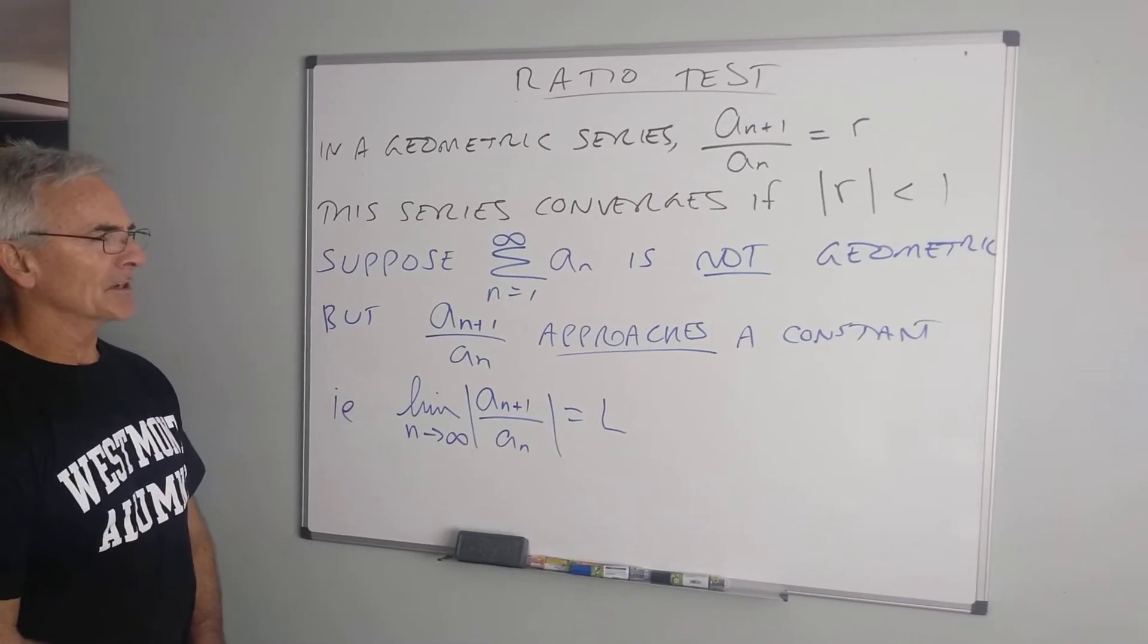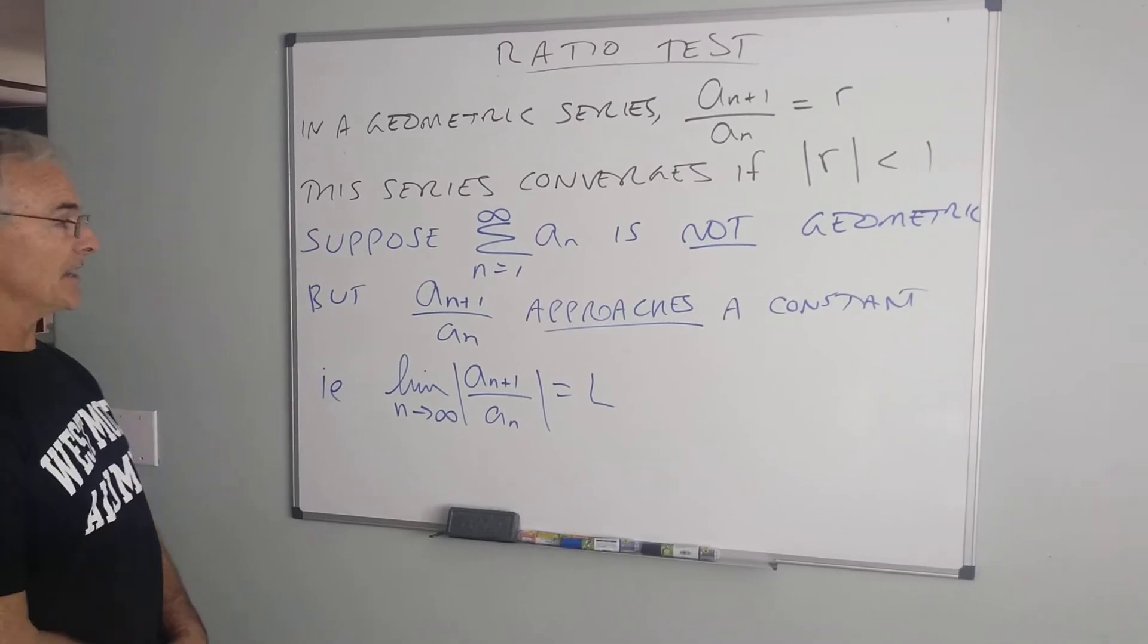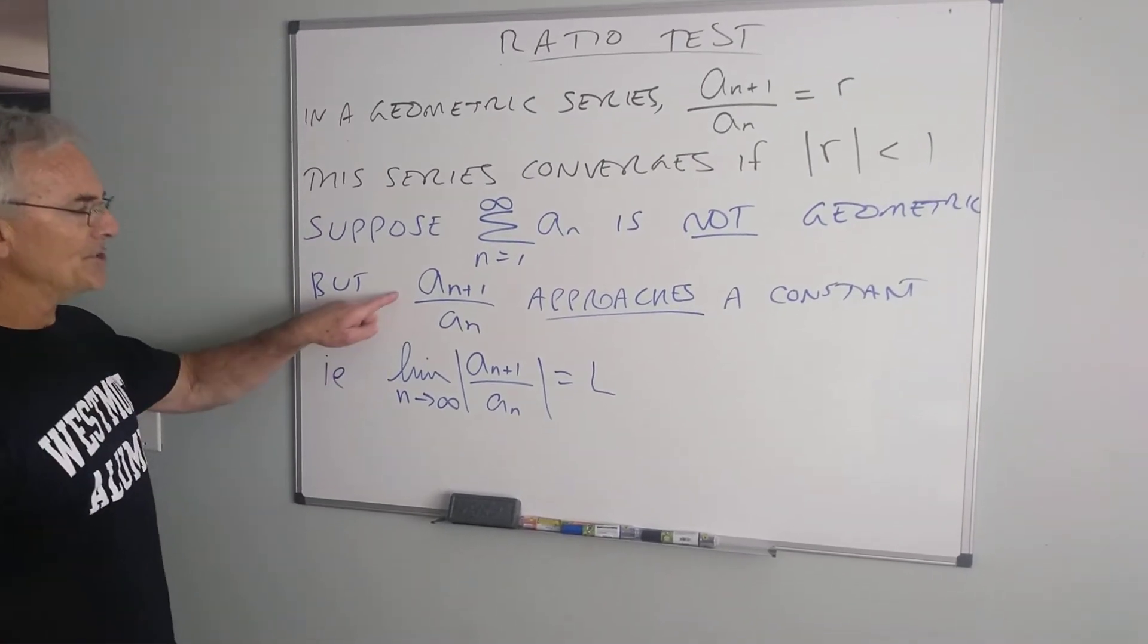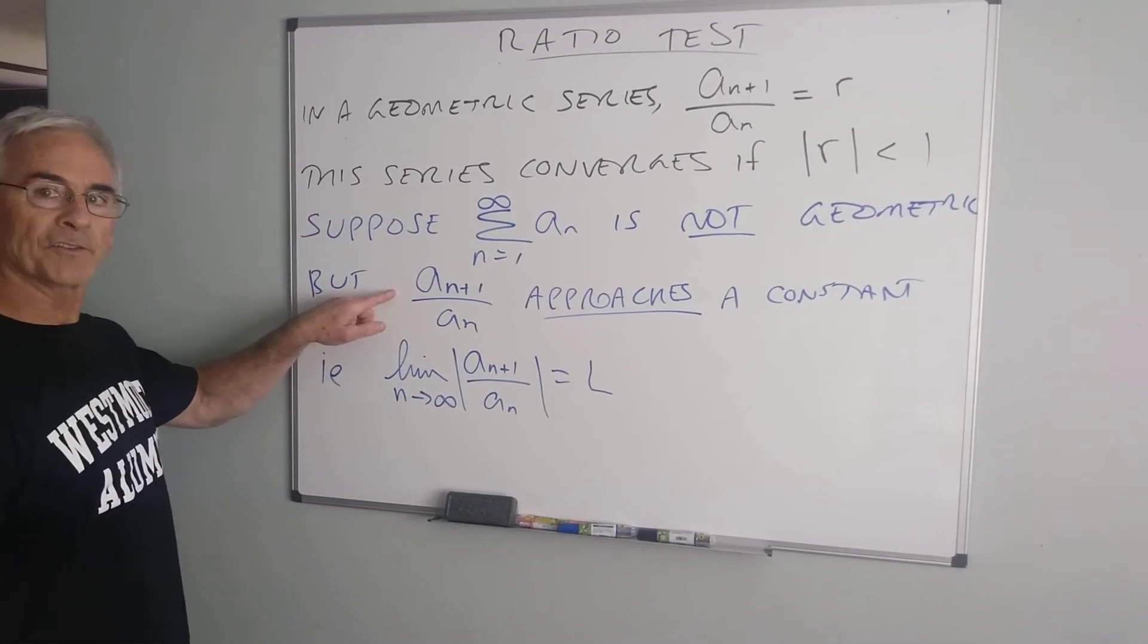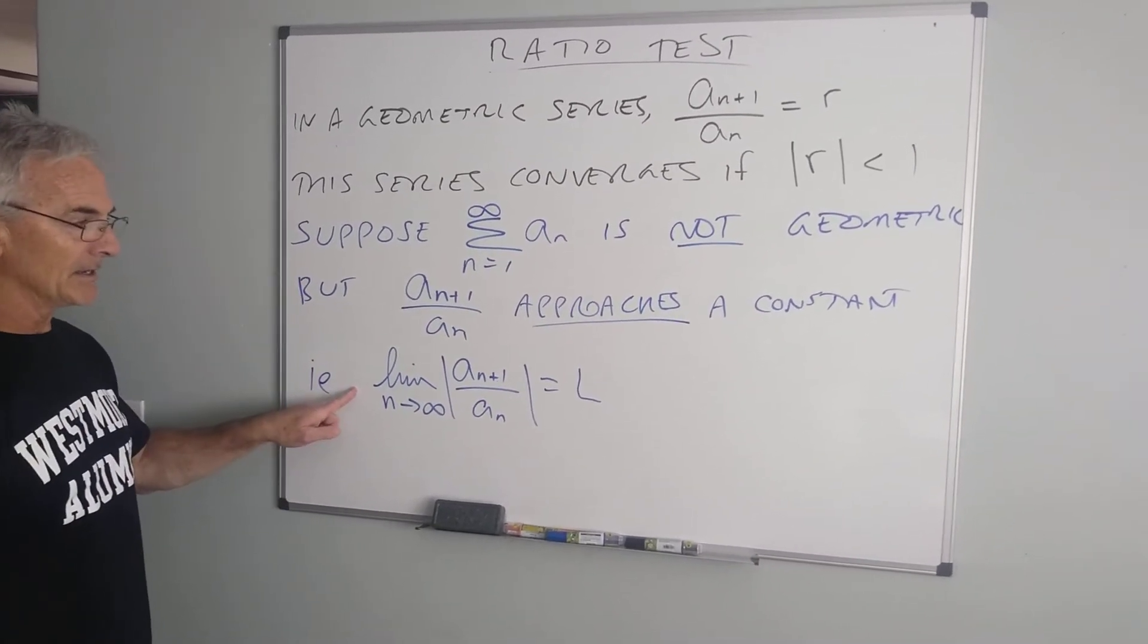So let's consider a series that is not geometric but acts like a geometric series in nature, in that the ratio of consecutive terms, although not a constant, approaches a constant, i.e., that the limit is a constant.